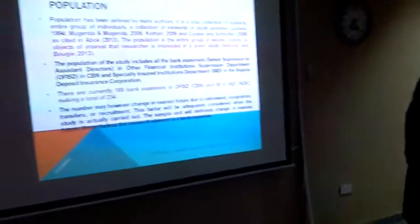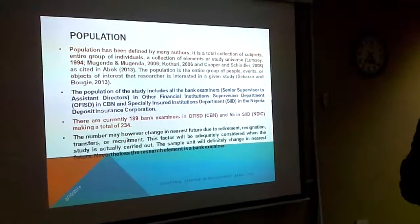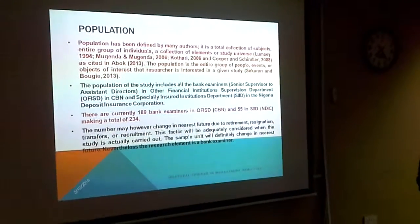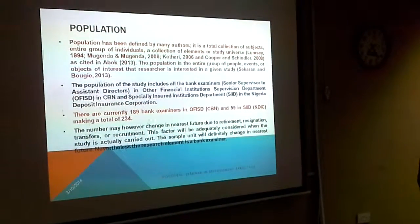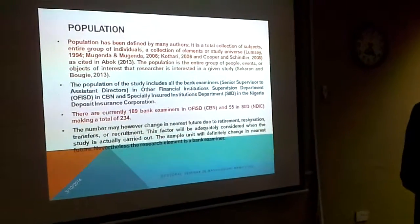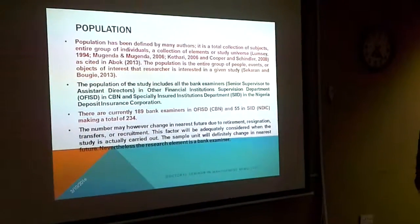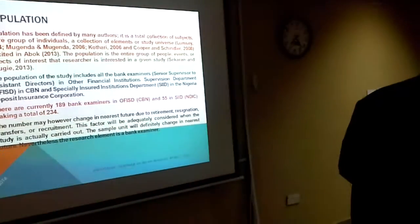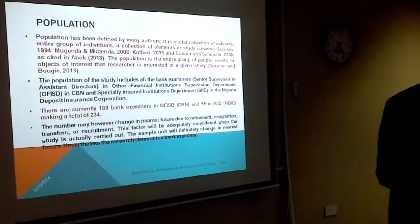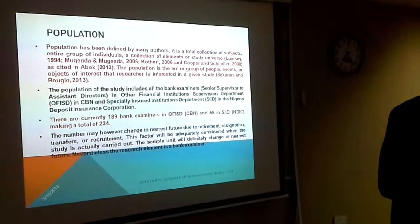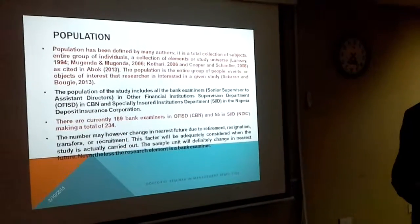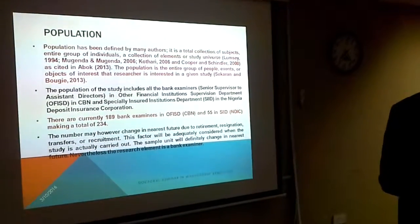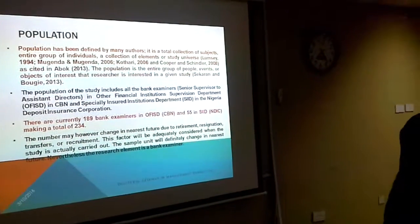Population has been defined by many authors as the total collection of subjects, entire group of individuals, or a collection of elements — the study universe. The population of this study includes all bank examiners, from senior supervisor to assistant director, in the Other Financial Institutions Supervision department of CBN and the Specially Insured Institutions department of NDIC. There are currently 118 bank examiners in CBN and 55 in NDIC, making a total of 234. This number may change in future due to retirement, resignation, transfer, or recruitment, but this factor will be adequately covered when the actual work is carried out.